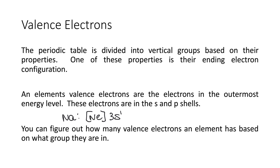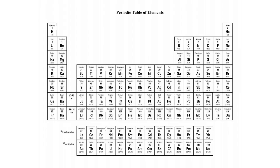I'm going to show you a shortcut. You can figure out how many valence electrons an element has based on what group they're in. This is the periodic table that you can get off the additional resources. You do have a periodic table, and I told you to put S1, S2 at the top. What's on the assignment is a periodic table with the groups already labeled.